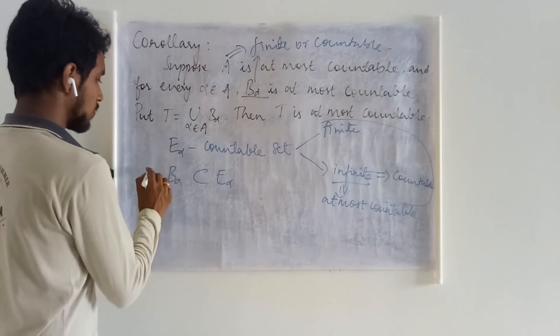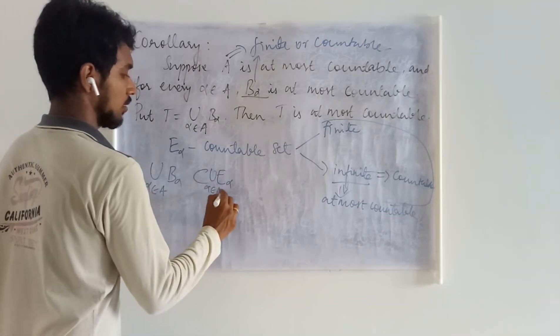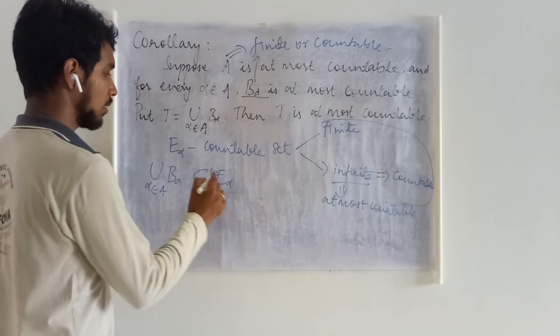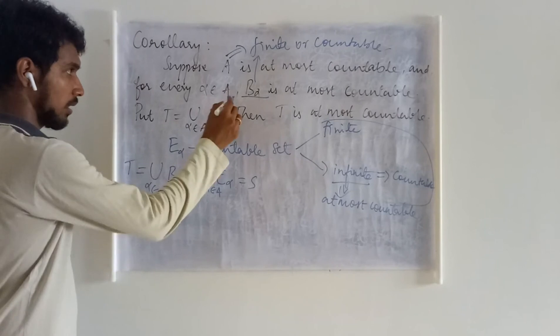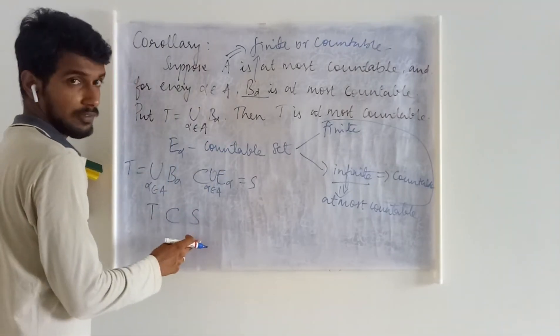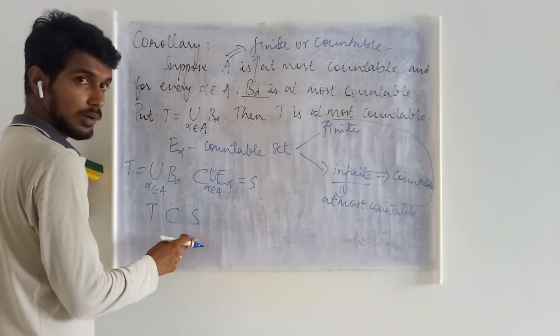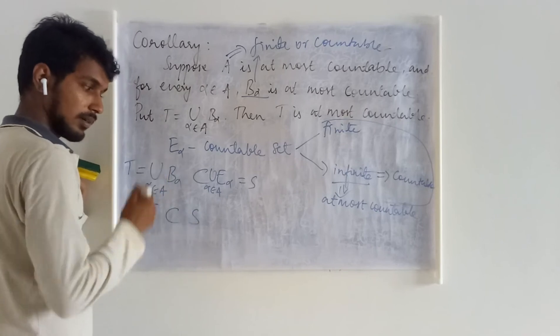What you can do is just make union of all these things. This is what we have taken S in the previous theorem, and let us take this to be T. T is going to be a subset of S, and this tells you what: S is a countable set, T is being a subset of S.